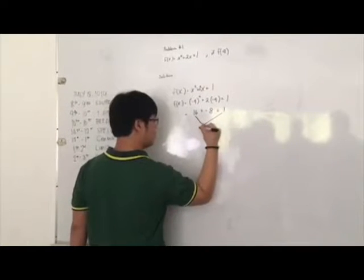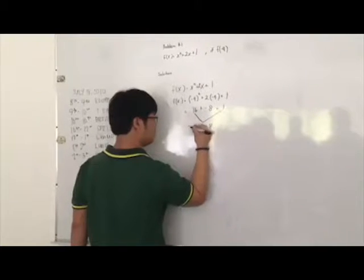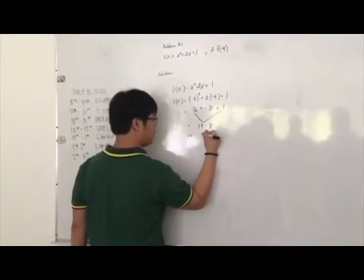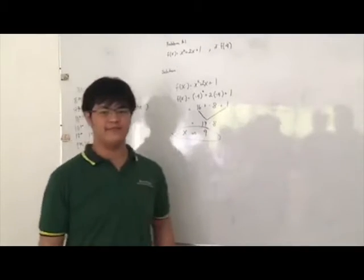16 plus 1 now gives us 17, then minus 8, and then that will give us 9. So now it will become f of negative 4 is equal to 9.